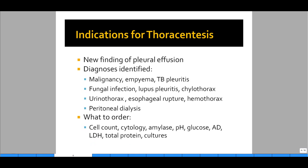What are the indications for a thoracentesis? One: a new finding of pleural effusion in the patient. What diagnoses can we identify? Such things as malignancies, empyema, TB, pleuritis, fungal infections, lupus, chylothorax, urinothorax (urine in the thorax), esophageal rupture, and hemothorax (blood in the thorax) are many of the diagnoses that can cause pleural effusions.